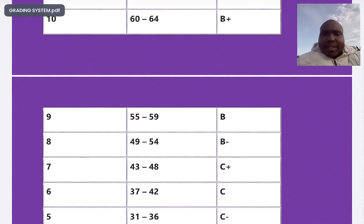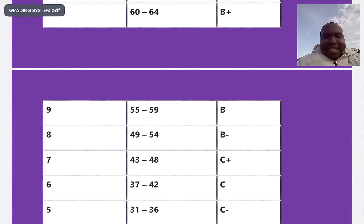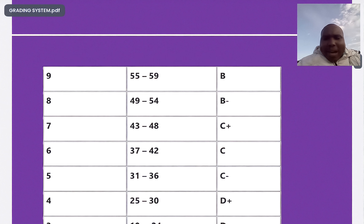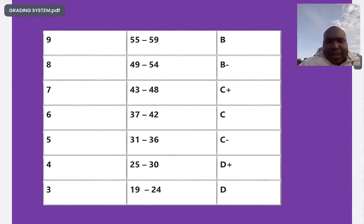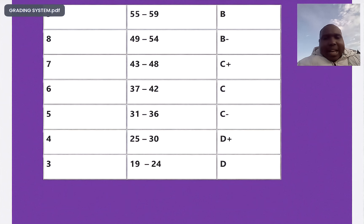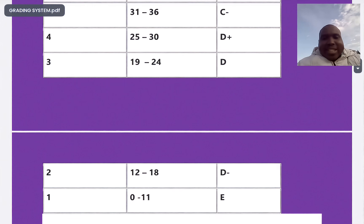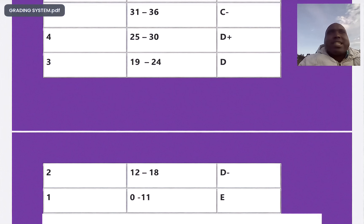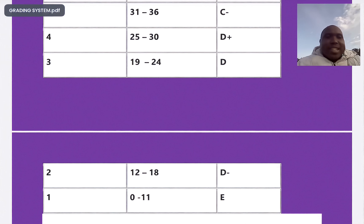In maths: 55 to 59 is B plain, 49 to 54 is B minus, 43 to 48 is C plus — so if you have 43 you grab a C plus. 37 to 42 is C plain, 31 to 36 is C minus, 25 to 30 is D plus, 19 to 24 is D plain, 12 to 18 is D minus, and 0 to 11 is an E. So all people who score an E in mathematics did not get more than 11 on average. The grading system is very fair.